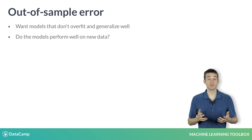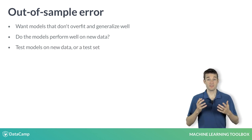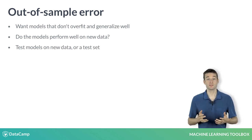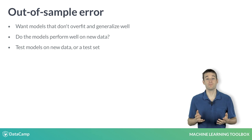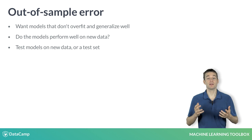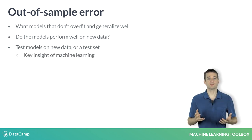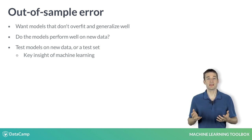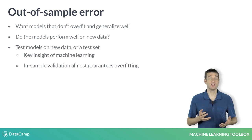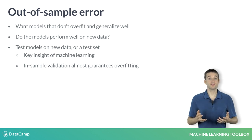The best way to answer this question is to test the models on new data. This simulates real-world experience in which you fit on one dataset and then predict on new data where you do not actually know the outcome. Simulating this experience with a train-test split helps you make an honest assessment of yourself as a modeler. This is one of the key insights of machine learning: error metrics should be computed on new data, because in-sample validation — or predicting on your training data — essentially guarantees overfitting.